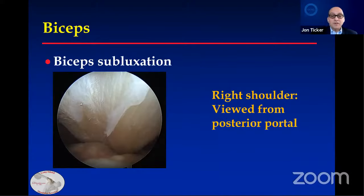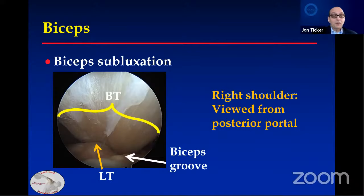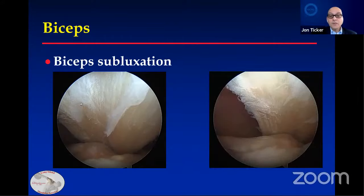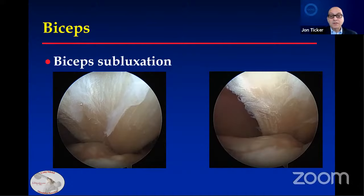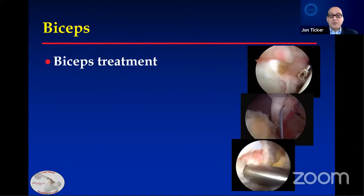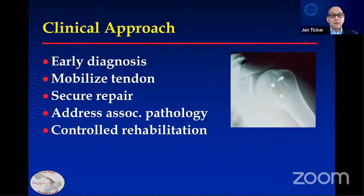This is a subluxed biceps in a right shoulder viewed from the posterior portal. You can see the edge of the lesser tuberosity, the biceps groove is pointed out, and the flattened, widened biceps tendon wearing on the bone. The same patient a little more medially — it can sublux because there's no subscapularis. You do have to take care of the biceps and treat it early, then move on to the subscapularis. There are times where I'll do a tenotomy or a tenodesis, depending upon the patient and the preoperative discussion.